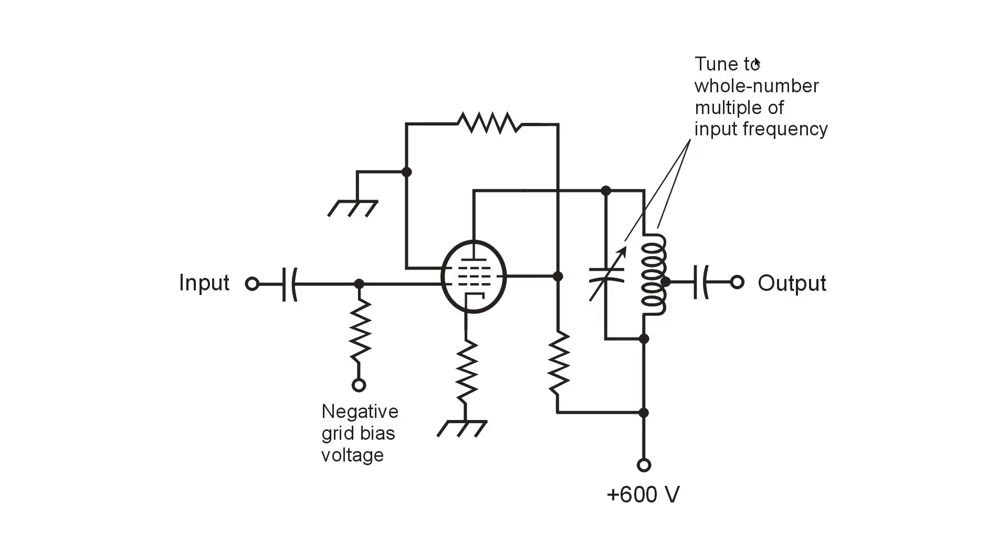You tune the output resonant circuit to a whole number multiple of the input frequency. That is, twice, three times, four times, five times, etc.